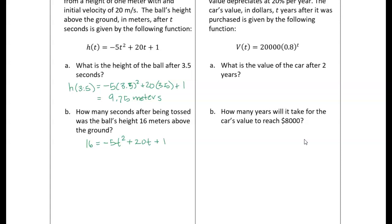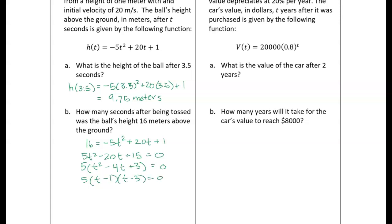We move everything to the left-hand side, getting 5t² - 20t + 15 = 0. Factoring out a 5 gives t² - 4t + 3 = 0, which factors into (t - 1)(t - 3) = 0. So t equals 1 or 3 seconds.